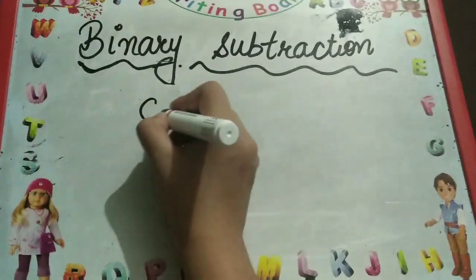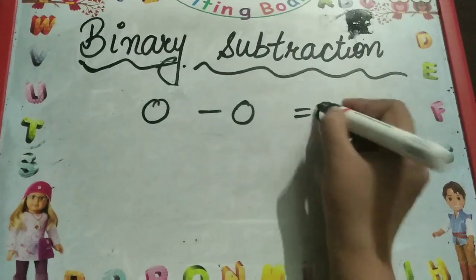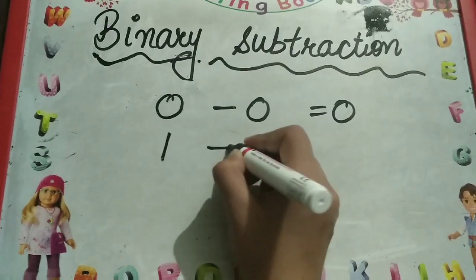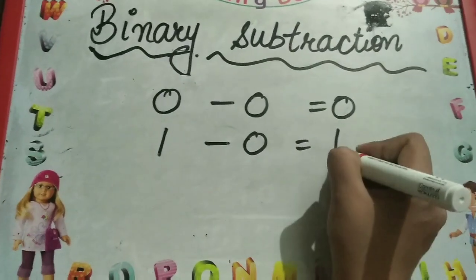Binary subtraction: 0 minus 0 equals 0, and 1 minus 0 equals 1.